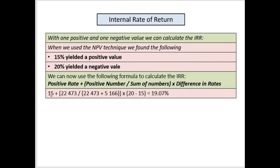So here we go: the positive rate was 15 percent — now we don't say percent here, the answer is going to be in percent. It's 15 plus our positive value 22,473, divided by the sum of the two, then multiplied by the difference of the two rates which is five. And then you get to 19.07.